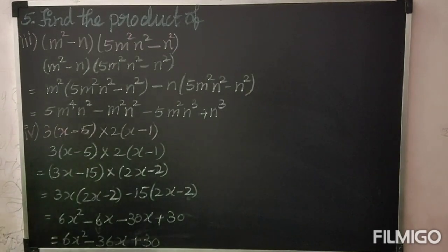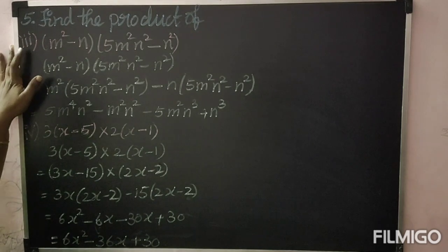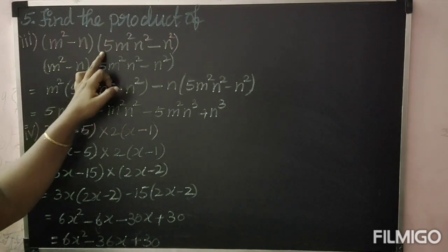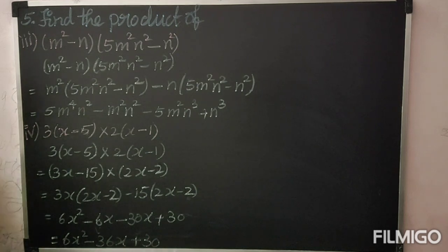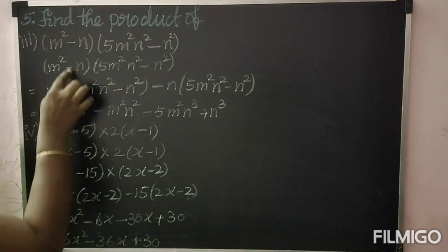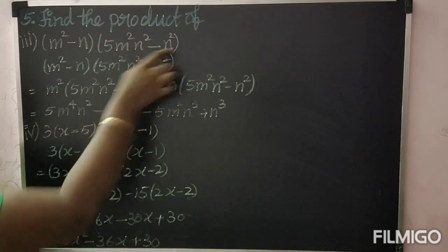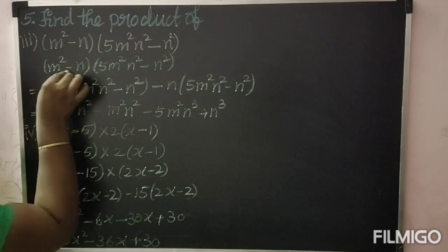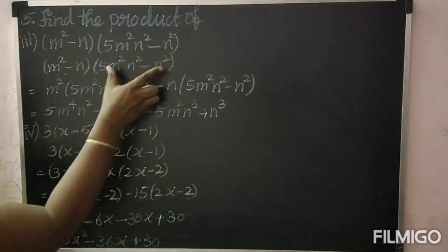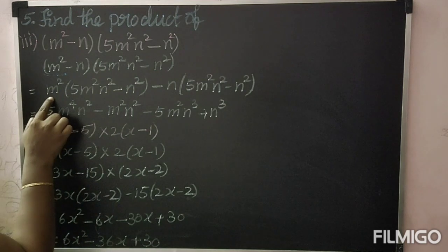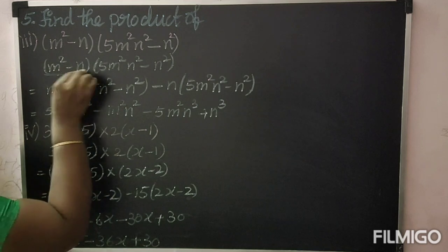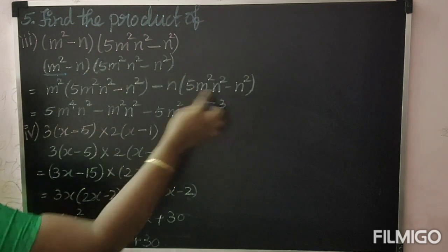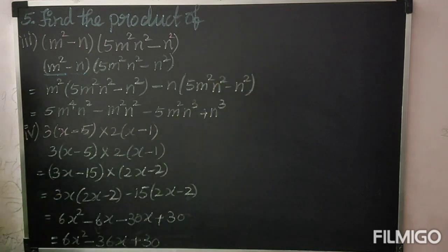Next, we are going to see the fifth problem: find the product — (m² − n)(5m²n² − n²). Both are binomial. We are going to see multiplication of binomial by binomial. Write the question as it is: (m² − n)(5m²n² − n²). Take first term and write second binomial: m² into (5m²n² − n²), then minus n into (5m²n² − n²).